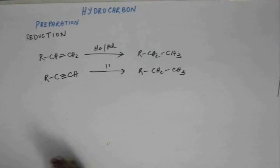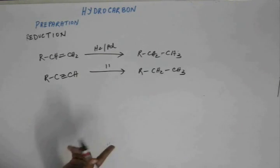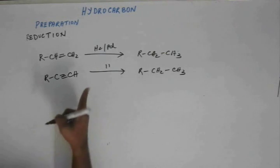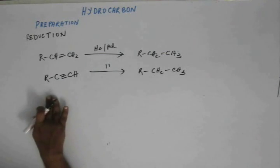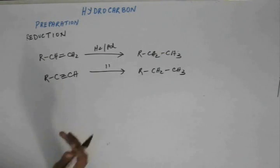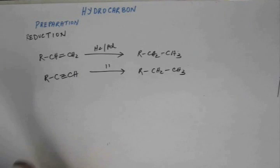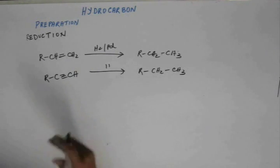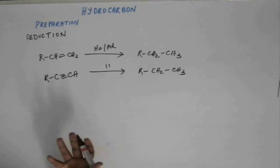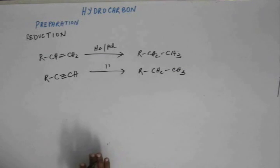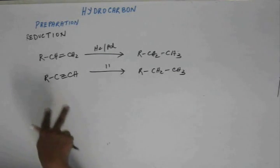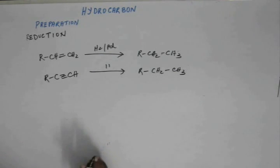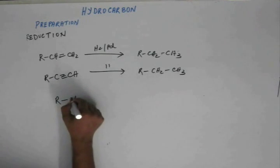We can get alkane by reduction of the corresponding unsaturated hydrocarbon. This is a reduction process because hydrogen is added. More commonly this is called hydrogenation, but it is a kind of reduction reaction — addition of hydrogen is considered as reduction.